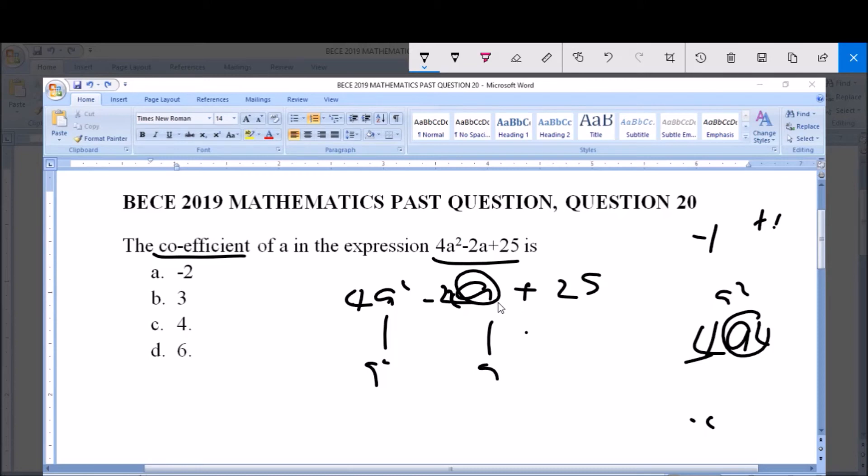So for us now to deduce the coefficient of this a, we have to consider the sign before the coefficient which is 2. And because the sign here is a negative sign, we will say our coefficient for a is minus 2. But if it's a squared now, the coefficient of a squared is 4, and because the sign here for 4 is positive...